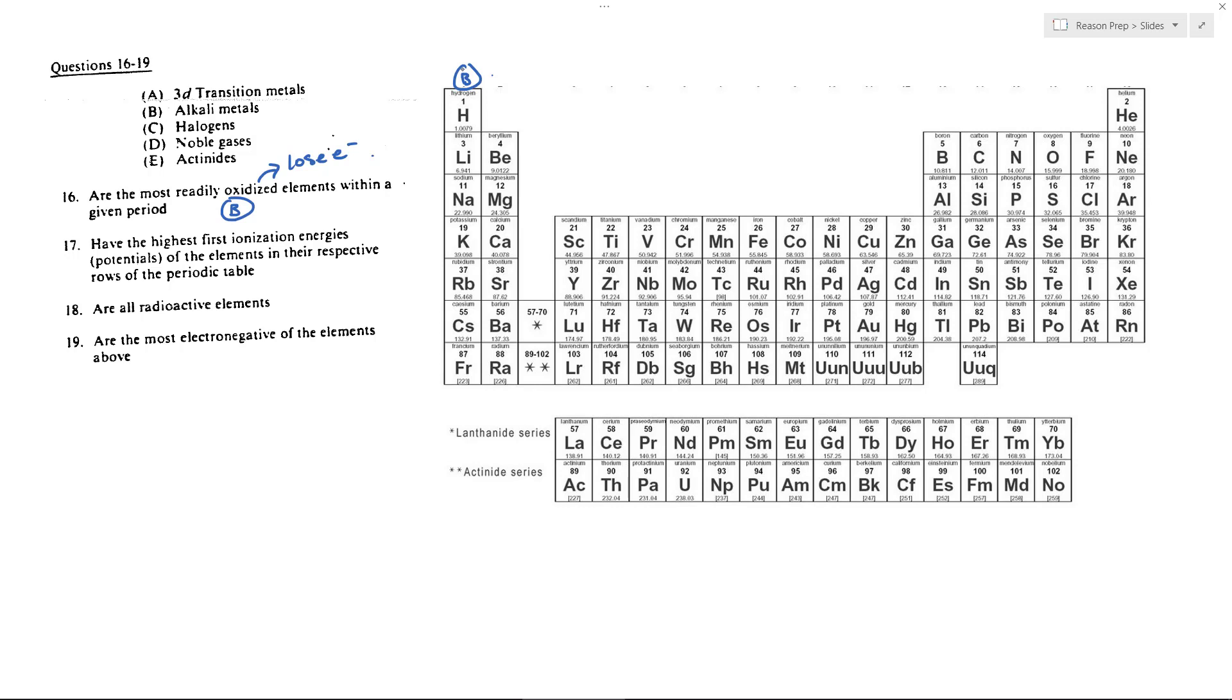Certainly group two, your alkaline earth metals, can lose electrons, usually two, but typically it's easier to just lose one electron than to lose two. And so the elements in group one, the alkali metals, are typically going to be the most easily or readily oxidized elements as a result.